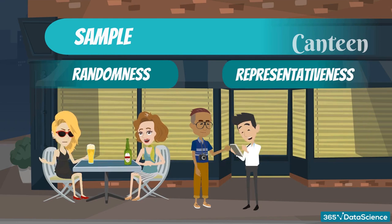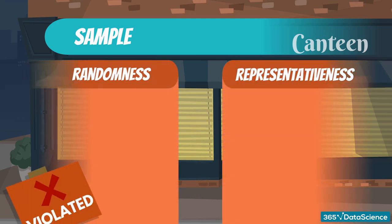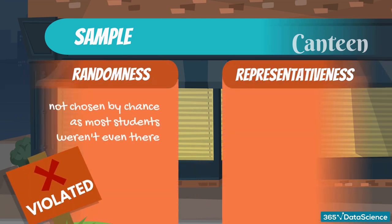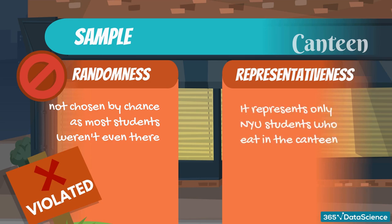Let's go back to the sample we just discussed: the 50 students from the NYU canteen. We walked into the university canteen and violated both conditions. People were not chosen by chance — they were a group of NYU students who were there for lunch. Most members did not even get the chance to be chosen, as they were not in the canteen. Thus, we conclude the sample was not random. But was it representative? It represented a group of people, but not all students in the university — specifically, those who have lunch at the university canteen.